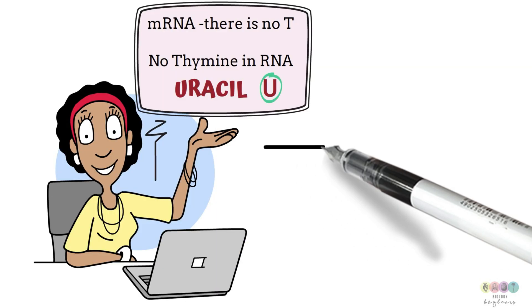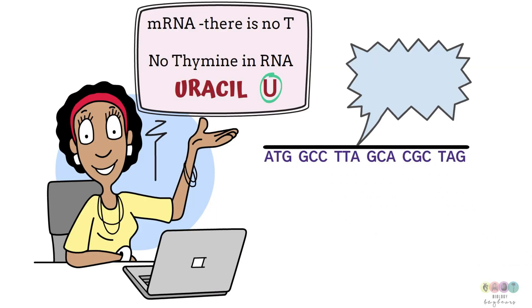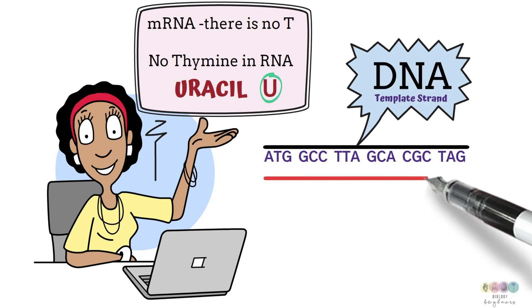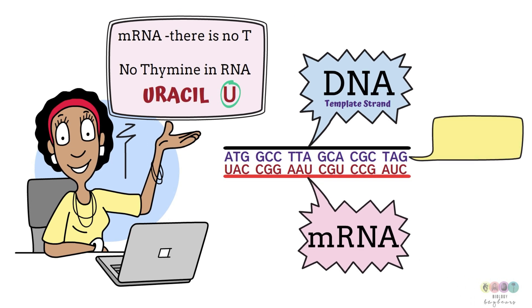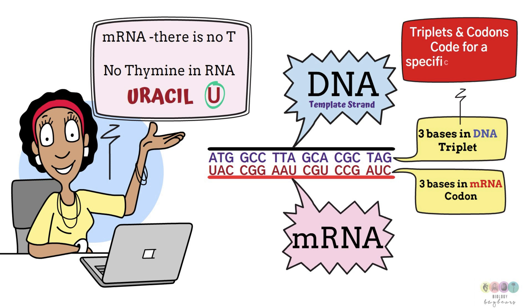For example, let's just make this a little bit clearer. This is a strand of DNA. Imagine this is the DNA that's acting as the template, the exposed strand. And you can see that the first base is A, which means that the complementary messenger RNA strand, the first base, will be U for uracil because there is no T. Also note that when you look at the DNA template strand, the bases are arranged in groups of threes. These are known as triplets. And then three bases in messenger RNA are known as codons. And triplets and codons code for a specific amino acid.